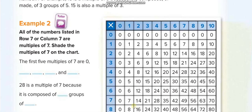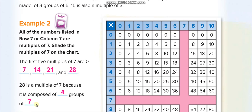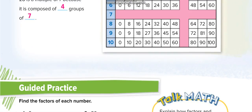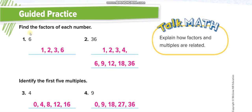So multiples are like the multiplication table: 7×0=0, 7×1=7, 7×2=14, 7×3=21, 7×4=28. It can continue, but they just ask us to write the first 5 multiples.